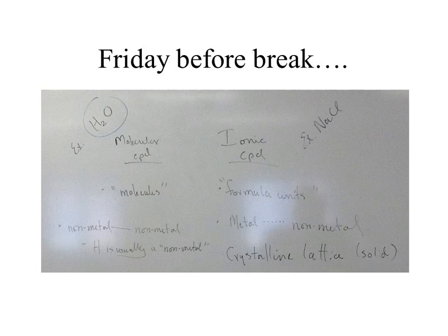If you have a metal — anything to the left of the jag, the diagonal on the periodic table — then it's an ionic compound. Ionic compounds in their solid form create crystalline lattice structures — that alternating NaCl, NaCl pattern — and that's why it's hard to isolate any single Na or Cl unit, which is why we call it a formula unit.